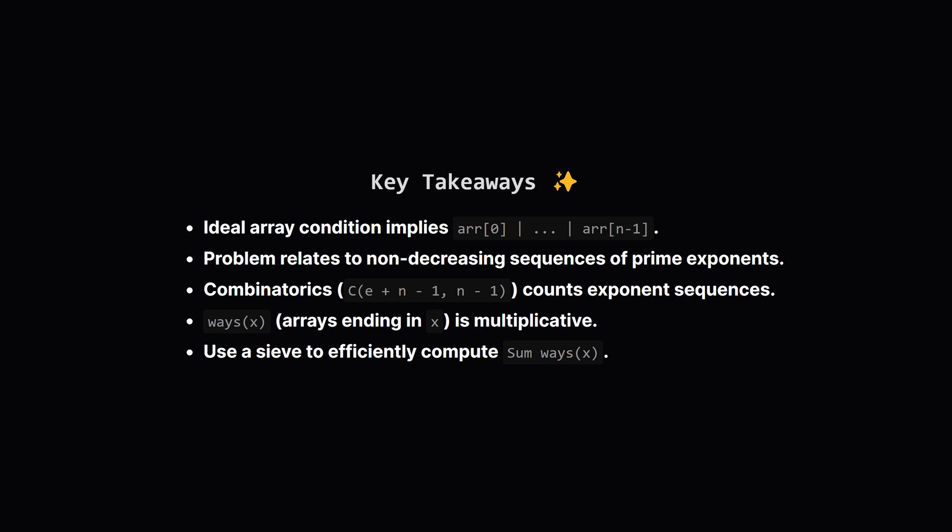So let's quickly recap the journey. We started with the definition of an ideal array, focusing on the divisibility rule. This led us to think about prime factor exponents needing to be non-decreasing. We used combinatorics, specifically stars and bars, to find the number of ways to form these exponent sequences for a given prime power, resulting in the formula C(E+n-1, n-1). We realized the function ways(X), counting arrays ending in X, was multiplicative. This allowed us to use a sieve-based method to efficiently compute all ways(X) values up to maxValue and sum them up. This combination of number theory, combinatorics, and efficient computation using a sieve gets us to the final answer within the time limits.